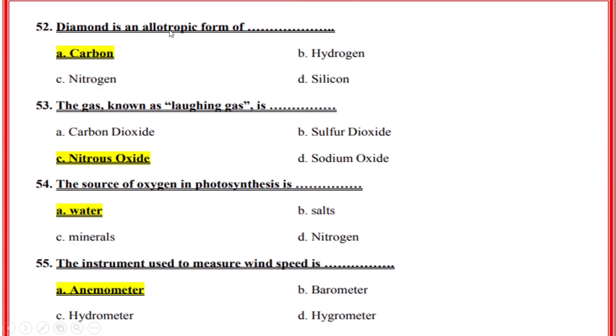Diamond is an allotropic form of? Correct option: A, Carbon.